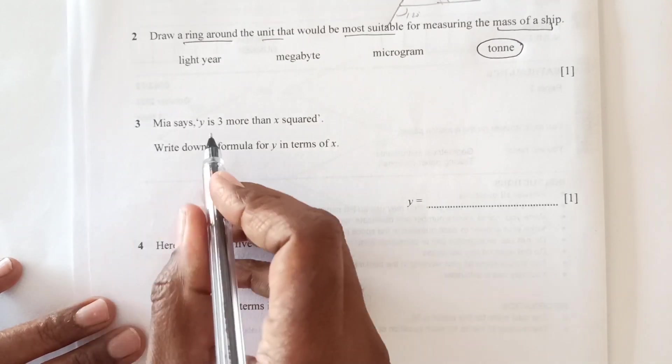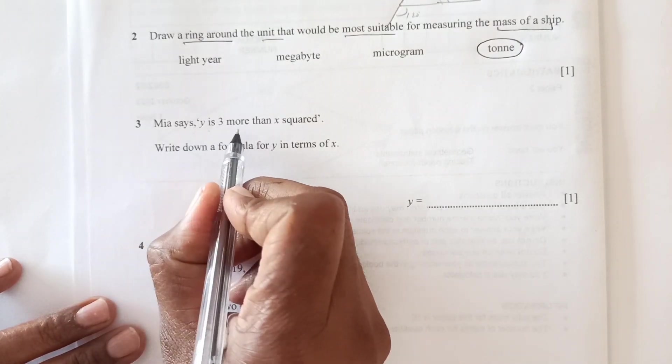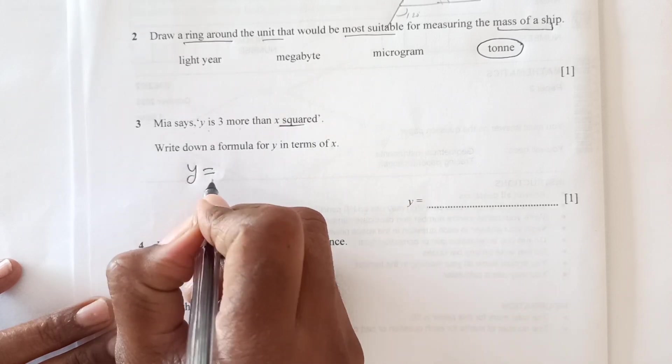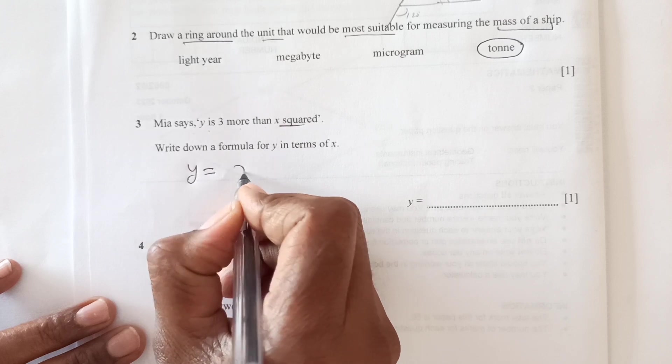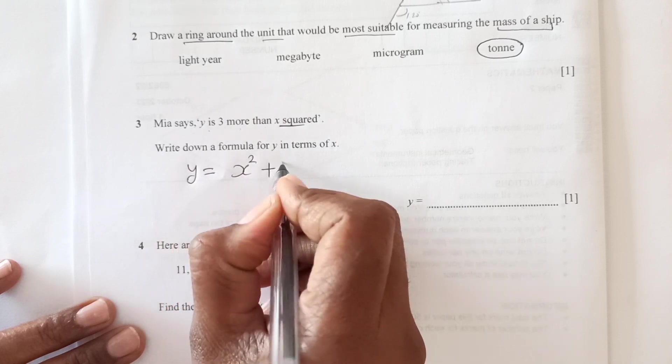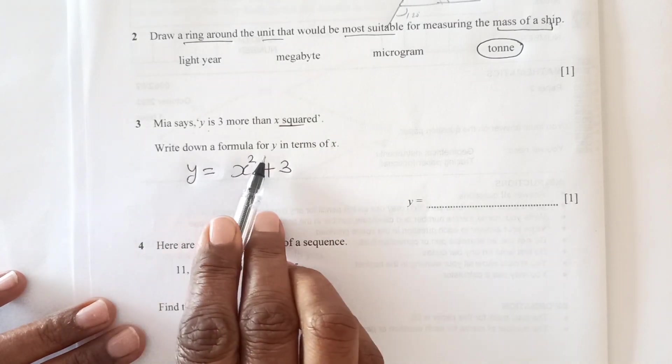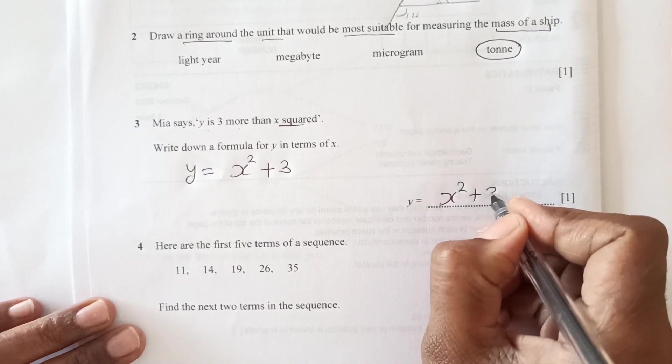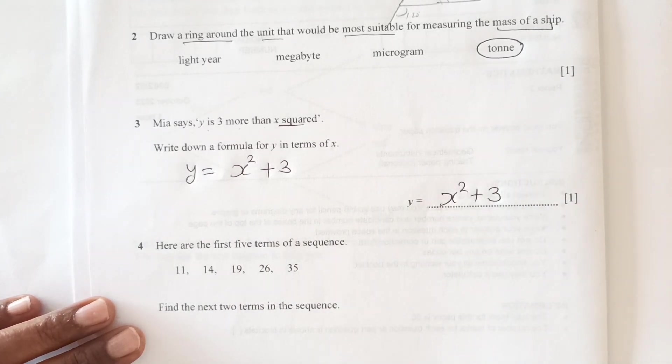Now number 3, Mia says y is 3 more than x squared. So y is equal to 3 more than x squared. x squared is x squared plus 3. So write this formula in terms of x. So we can write it down here x squared plus 3.